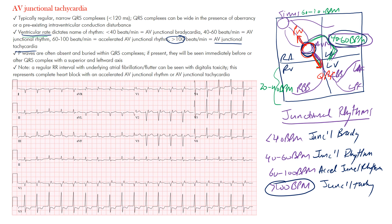If you do have P waves, they tend to go away from the normal conduction pathway. Normal conduction goes from the sinus node toward the AV node, but with retrograde conduction it goes in the opposite direction. So you may see inverted P waves in the inferior leads, and maybe an upright P wave in lead AVR. Looking at this example, the rhythm appears fast, and notice there are no clear P waves preceding each QRS complex.